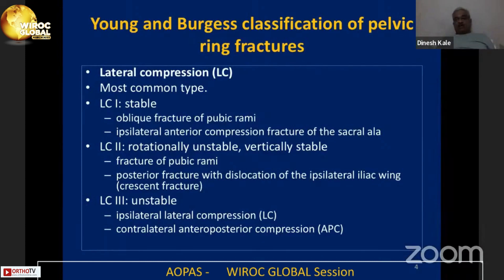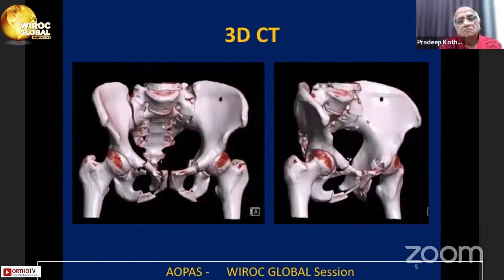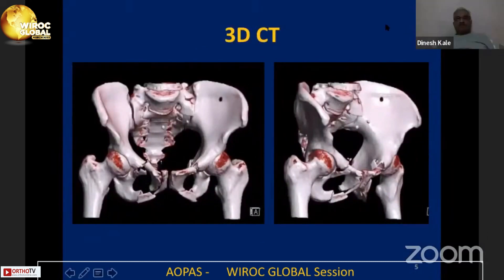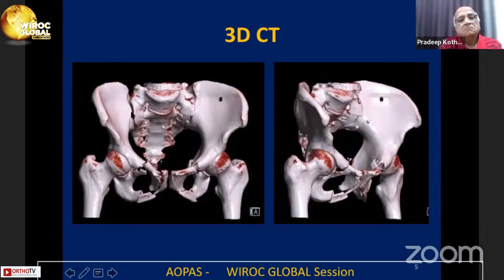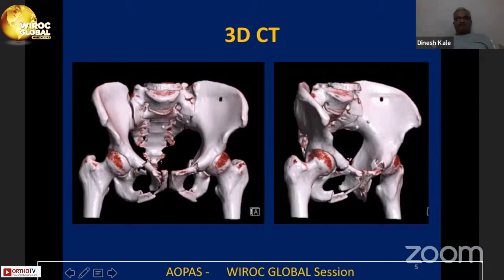This is a case where you can see both injury types present. On this side you have a crescent fracture, and on this side you have a SI joint opening with bilateral rami fractures that are fairly well placed. You also have a vertical fracture going through the fragment where it is not moving forward.